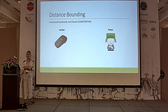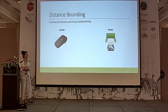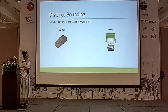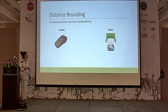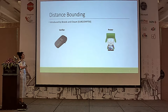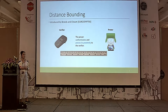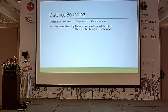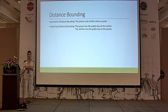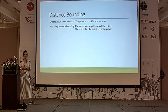The most promising solution for this is the distance bounding protocol, introduced by Brands and Chaum. The idea is very simple: we have two parties, verifier and prover. In distance bounding, the prover authenticates himself and also proves his proximity. We have two types: public key distance bounding and symmetric key distance bounding.